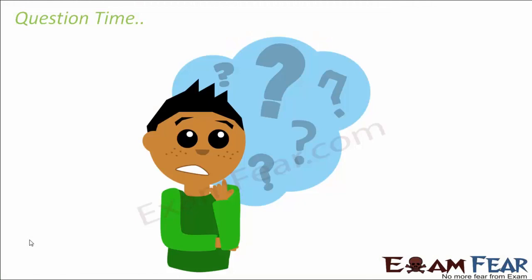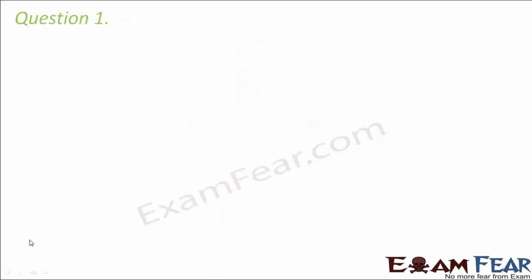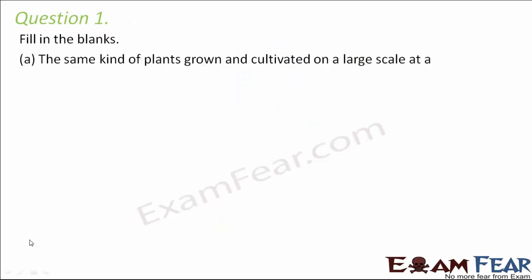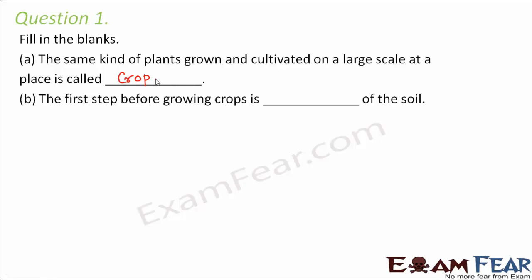Question number one: fill in the blanks. The same kind of plants grown and cultivated on a large scale at a place is called what? When we grow thousands of tomato plants in a field instead of just one, that is called a crop. The first step before growing crops is preparation of the soil — just like you need to prepare before exams, the soil has to be prepared before crop cultivation.